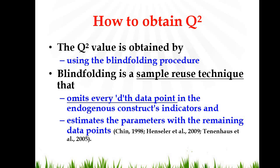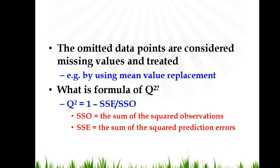What is dth data point? I'll explain it later. So it omits certain dth data points in the endogenous constructs indicators and estimates the parameters with the remaining data points. The omitted dth data points are considered missing values which are treated by SmartPLS by using a technique which we call mean value replacement. What is formula of Q-square? Q-square is equal to 1 minus SSE divided by SSO, where SSO is the sum of the squared observations and SSE is the sum of the squared prediction errors.